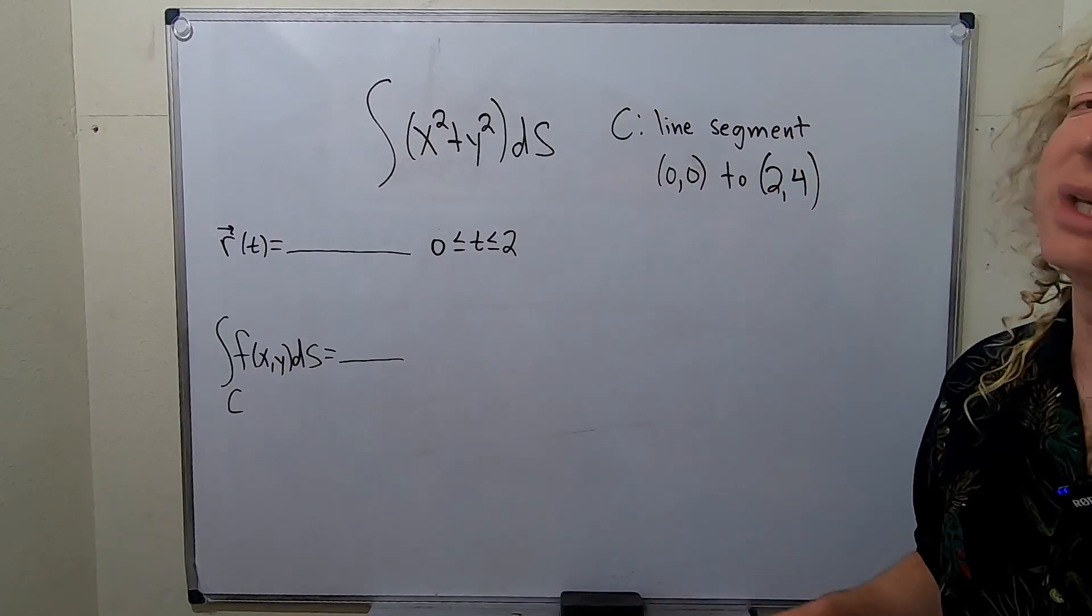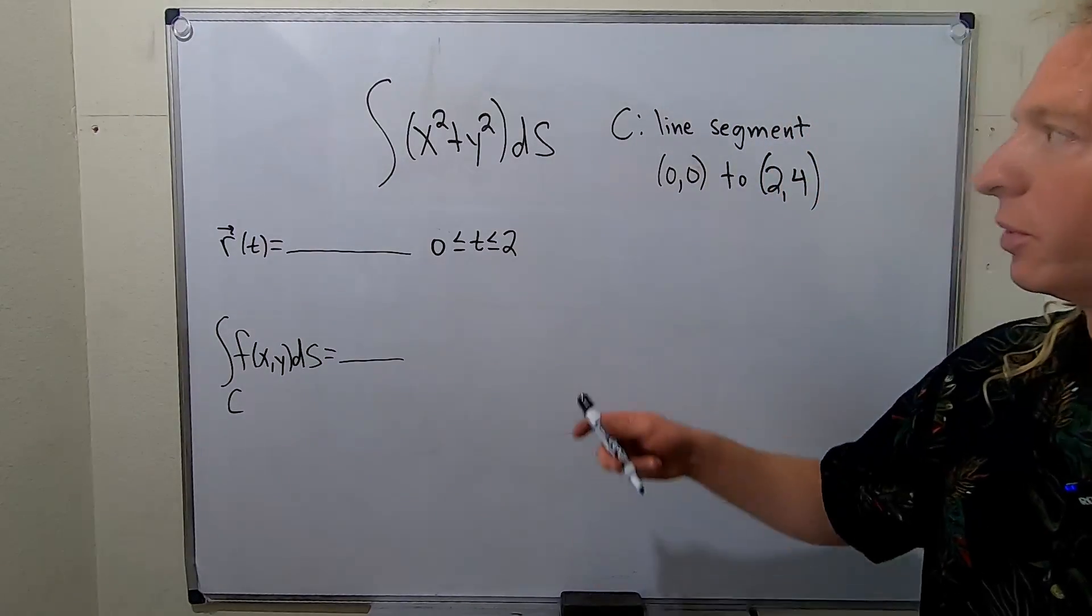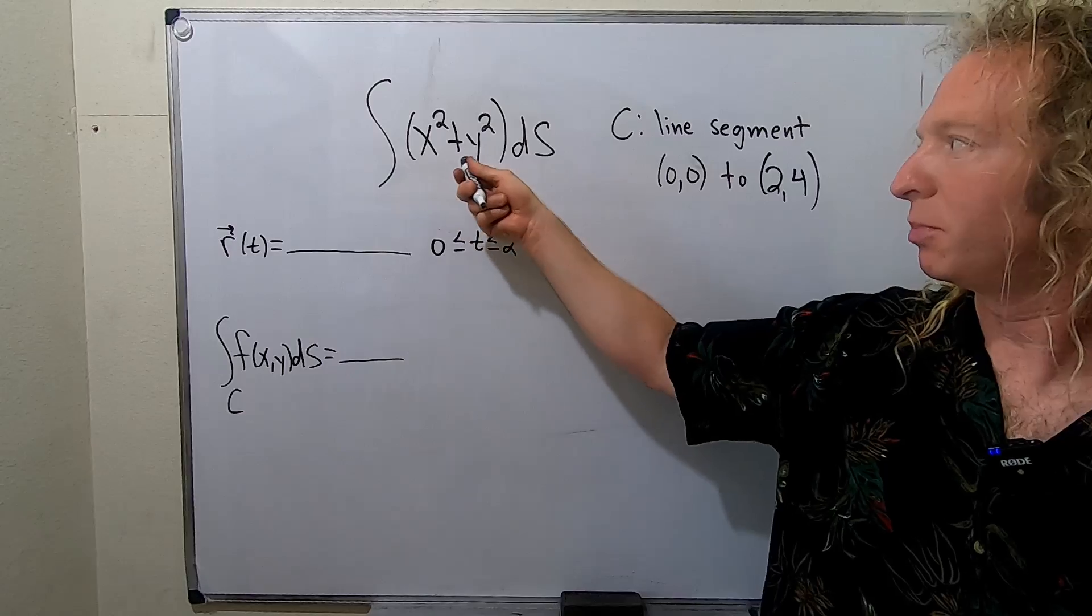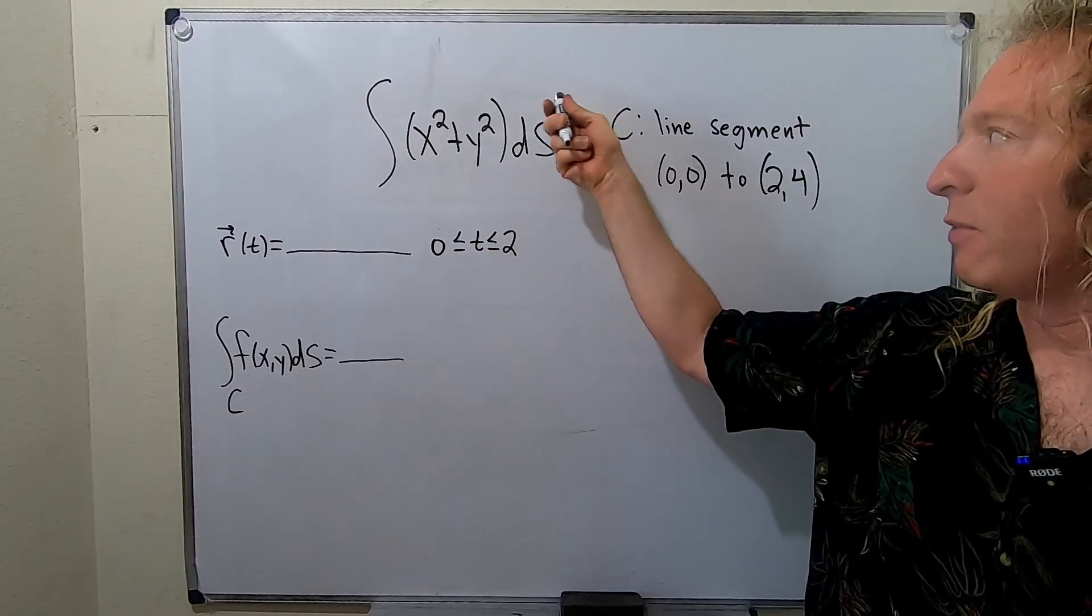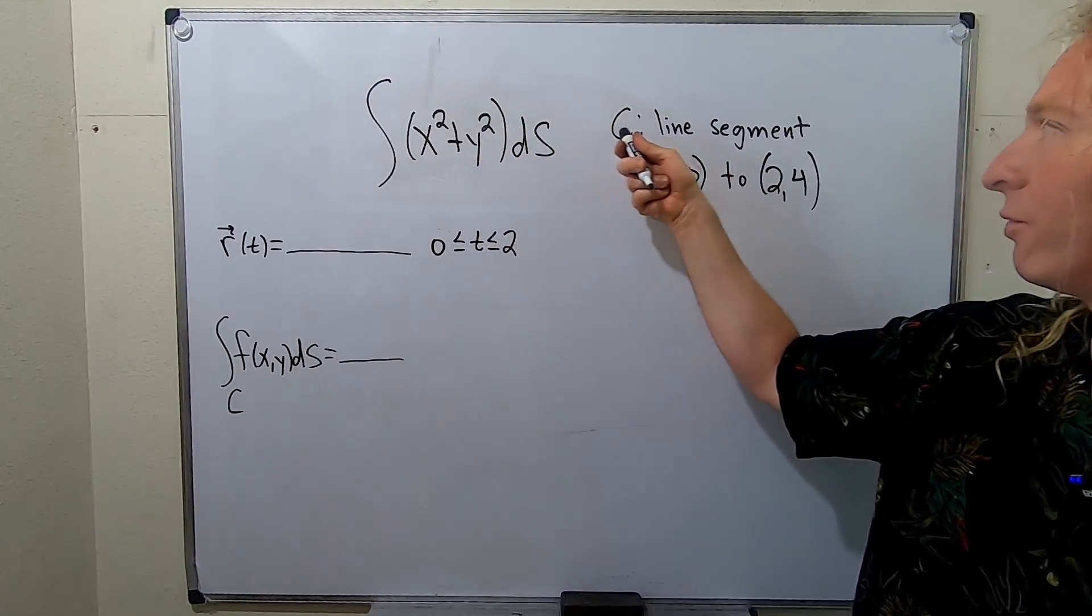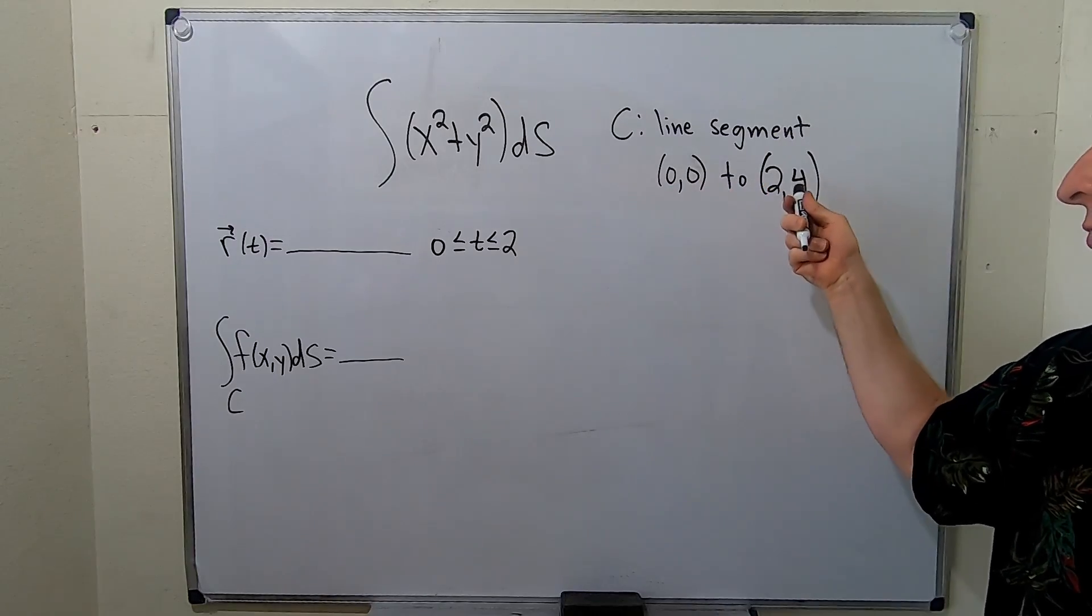In this video we're going to evaluate a line integral. We're given the integral of x squared plus y squared ds and we have to integrate this over the line segment going from 0,0 to 2,4.